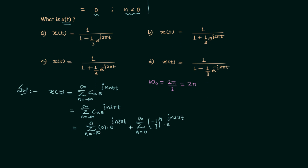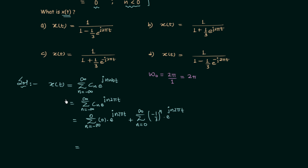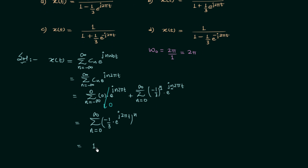From the first summation we get 0 because all coefficients are zero. From the second summation, taking n as common, we have summation n from 0 to infinity of (−(1/3) · e^(j2πt))^n. When n = 0 we get 1, when n = 1 we get −(1/3)e^(j2πt), and so on.